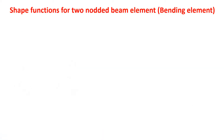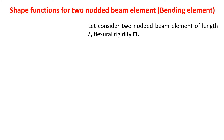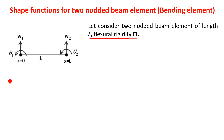To derive the shape functions of a two-noded beam element, consider a two-noded beam element of length L and flexural rigidity EI. Assuming the left end of the beam as origin, the x-coordinate at node number 1 is 0, that is x equal to 0, and at node number 2, x is equal to L.